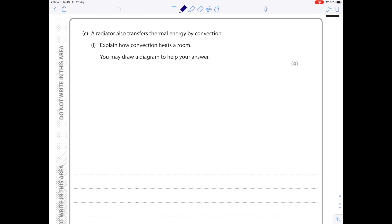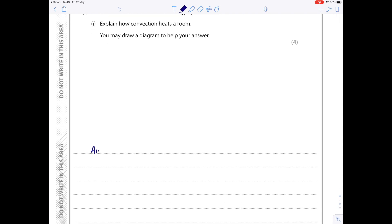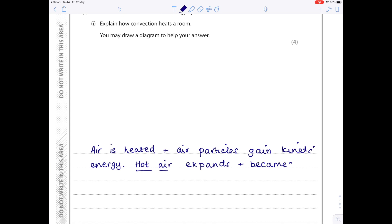You just need to provide a very perfect answer as to how convection currents work. So let's first of all state that air is heated and air particles gain kinetic energy. Next up, you want to state that the hot air expands and becomes less dense.